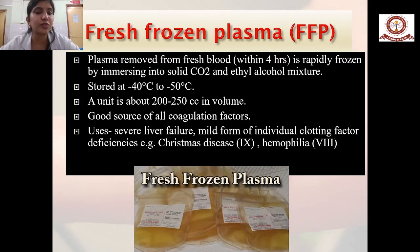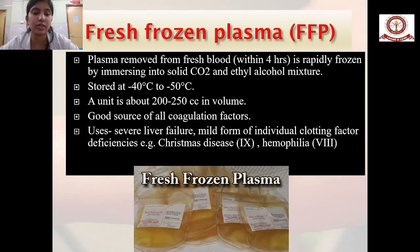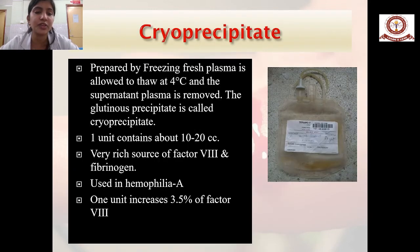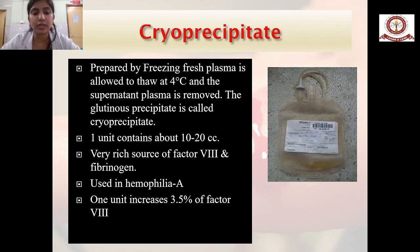Fresh frozen plasma is plasma removed from fresh blood within 4 hours, rapidly frozen in solid carbon dioxide-ethyl alcohol mixture and stored at minus 40 to minus 50 degrees. It is about 200 to 250 cc in volume and is a good source of all coagulation factors, used in severe liver failure, mild individual clotting factor deficiency such as Christmas disease and Haemophilia. Cryoprecipitate is prepared by freezing fresh frozen plasma and allowing it to thaw at 4 degrees centigrade; the glutinous precipitate contains about 10 to 20 cc per unit and is a very rich source of factor VIII and fibrinogen, used in Haemophilia A.